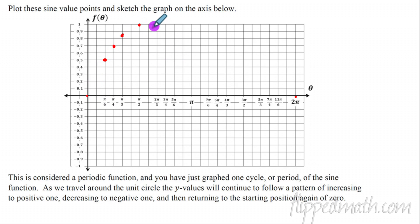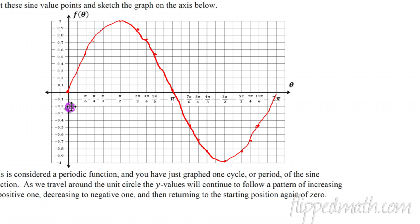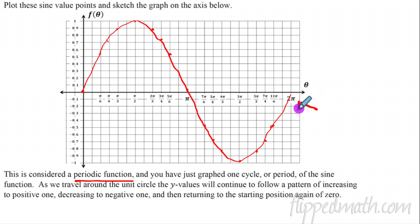Pause the video and complete this curve - plot all those points from your table. Hopefully your graph is as cool as mine. We're plotting the y-coordinate of the unit circle: it started at zero, went all the way up at pi over two to one, came back to zero, went to negative one, and came back up. That is one cycle of this periodic function. It's called periodic because it repeats itself. The period of the function is how long it takes to complete one cycle, so the period here is two pi - it takes two pi radians to complete one full cycle.